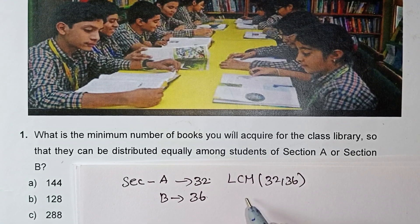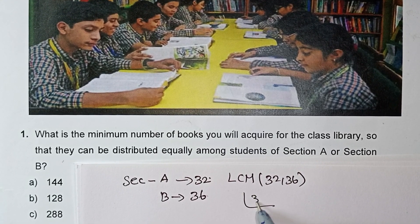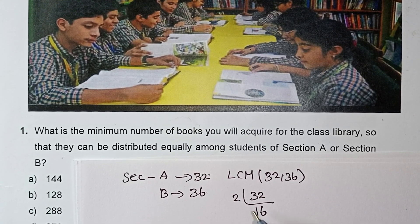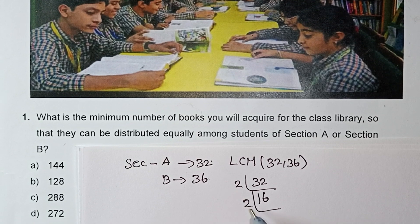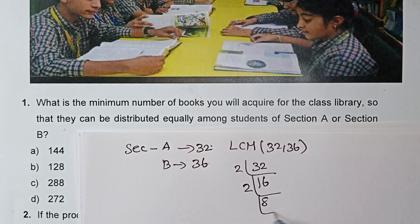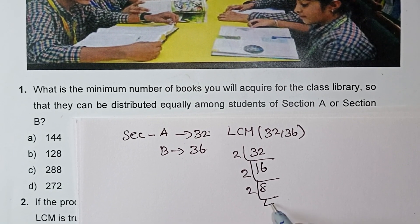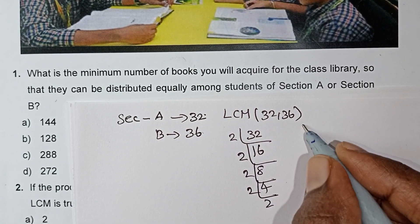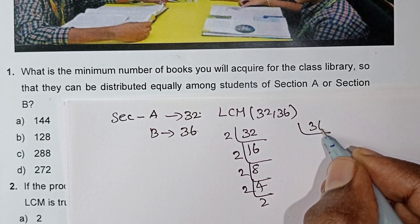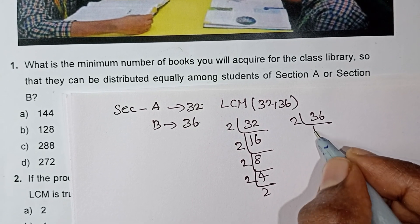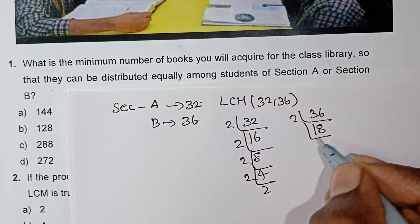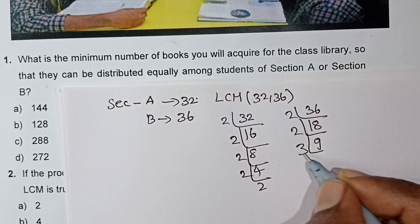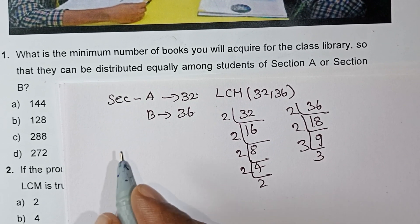So first, prime factorization: 32 = 2×16, 2×8, 2×4, 2×2. And 36 = 2×18, 2×9, 3×3.